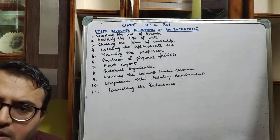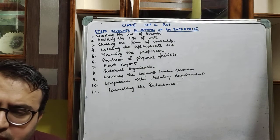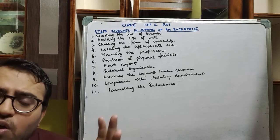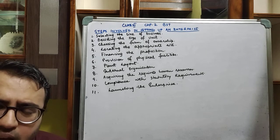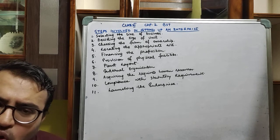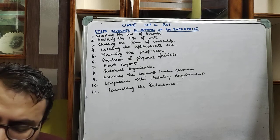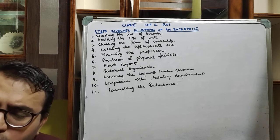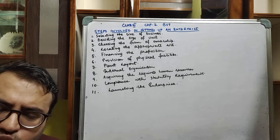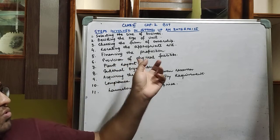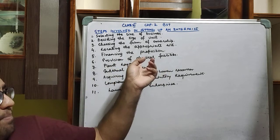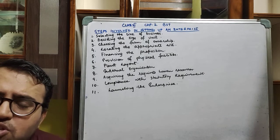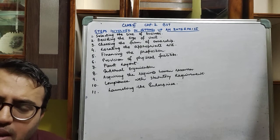Next is provision of physical facilities. A good enterprise should have all the physical facilities like a good working environment, well ventilated, well lit, with a good ambience and all the infrastructure. All machines should be in place, and there should be good supervisors and well-trained instructors.